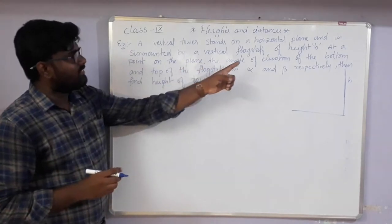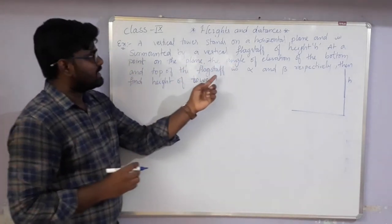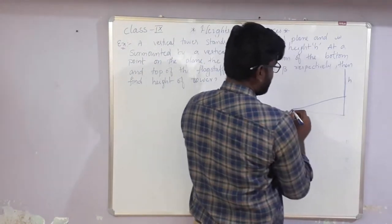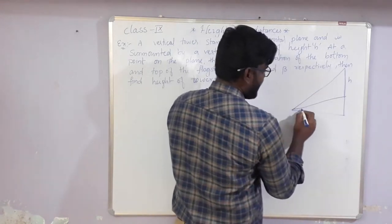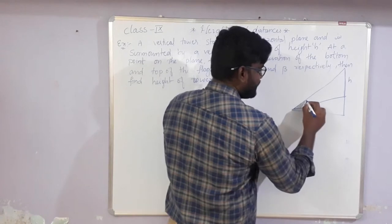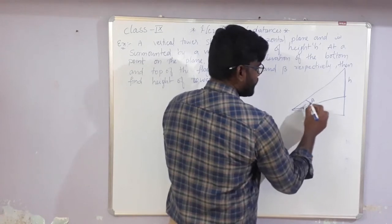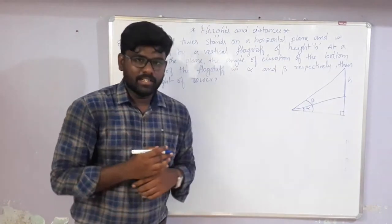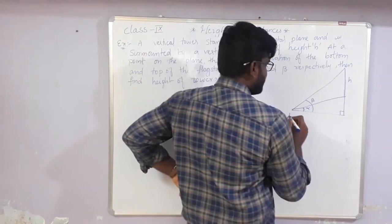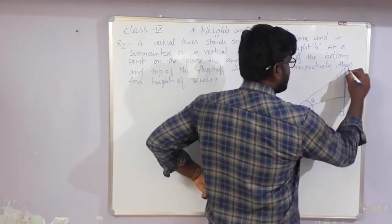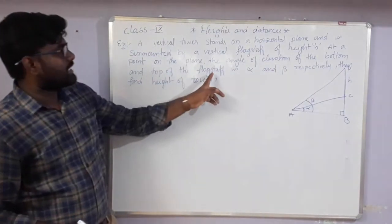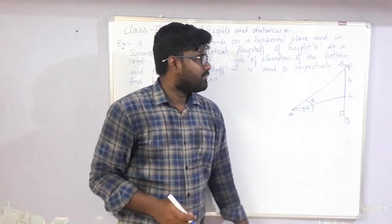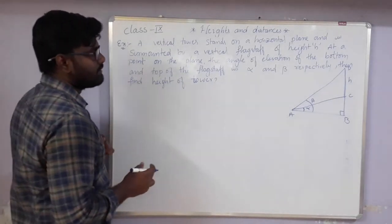From some point on the plane, the angle of elevation from the bottom and top of the flagstaff is alpha and beta respectively. The bottom angle is alpha and the top angle is beta. We get two right angle triangles. We give the names A, B, C, D. CD length is nothing but the flagstaff height h. We want to find BC, the height of the tower.